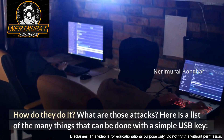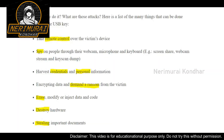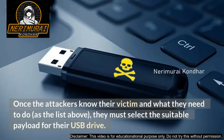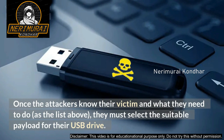Here is a list of the many things that can be done with a simple USB key: one, take remote control over the victim's device; two, spy on people through their webcam, microphone, and keyboard — for example screen share, webcam stream, and keylogger dump; three, harvest credentials and personal information; four, encrypt data and demand a ransom; five, erase, modify, or inject data and code; six, destroy hardware; seven, steal important documents.